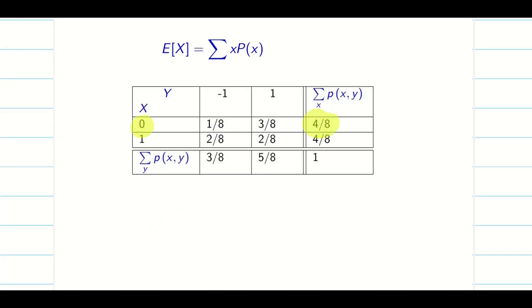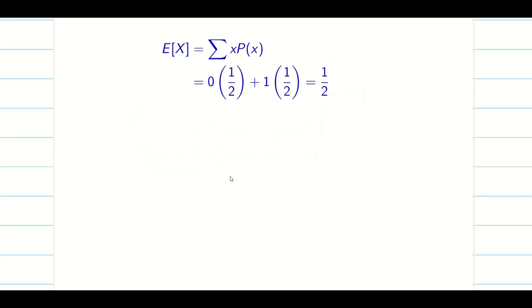Similarly, we have the next value of X1 and the corresponding probability is 4 by 8. So it is going to be 0 into 4 by 8 plus 1 into 4 by 8. We get the solution.